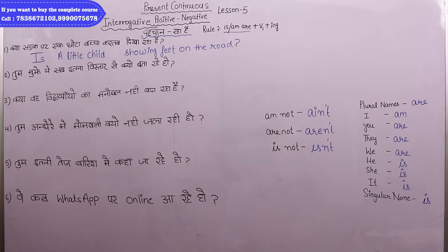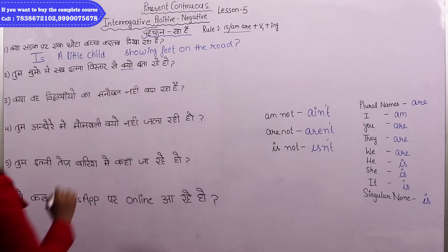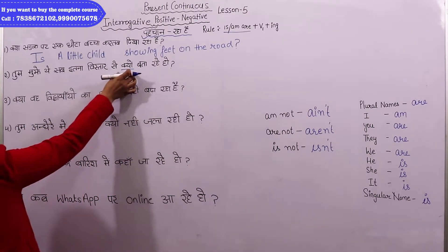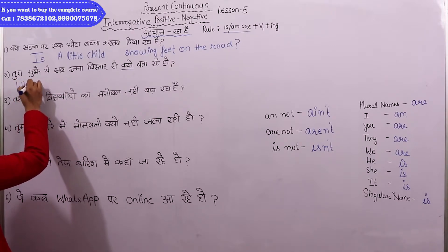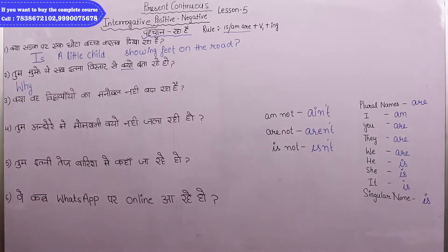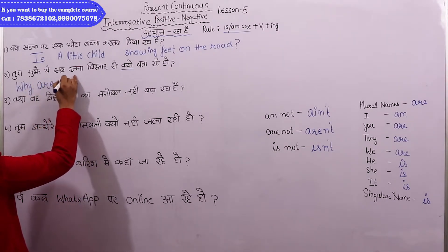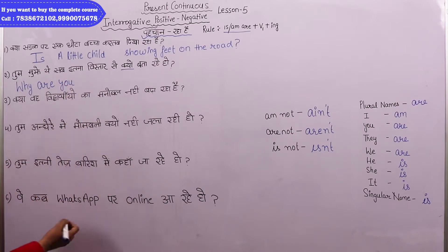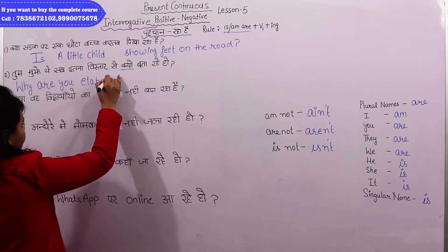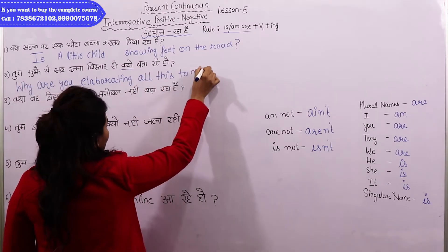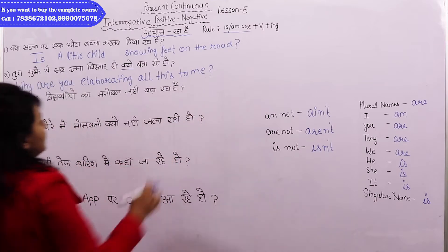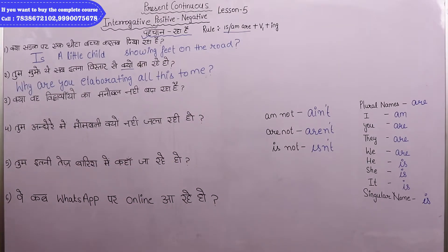Sentence number two: 'Tum mujhe ye sab itna vistar se kyun bata rahe ho?' All sentences I have written are interrogative, so they contain a question. 'Kyun' means 'why' — we take out the WH word first. The subject is 'tum' (you), and 'are' is used with 'you'. The answer: 'Why are you elaborating all this to me?' — 'Elaborating' means explaining something very deeply to someone.